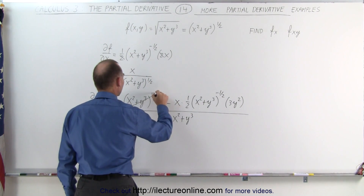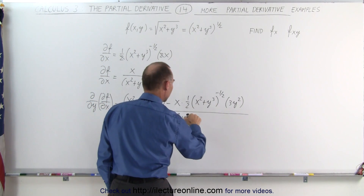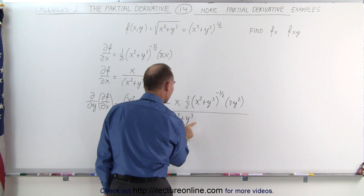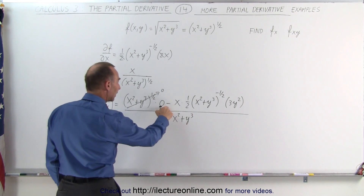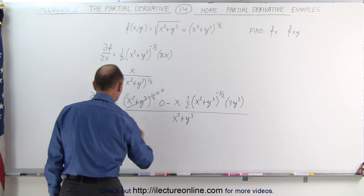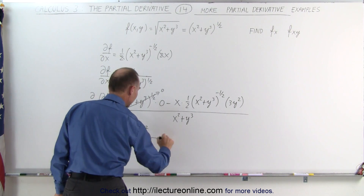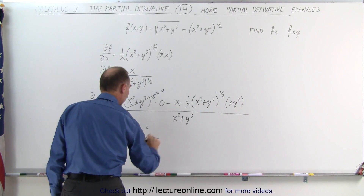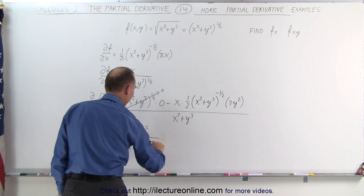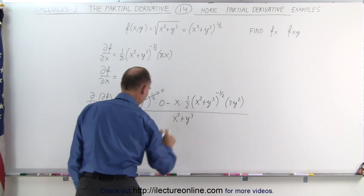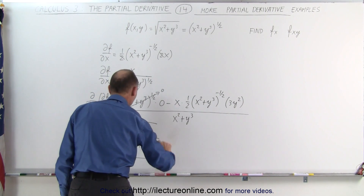Simplifying, the zero term drops out. This can now be written as: we have a minus x, a 3, and a y squared in the numerator — that is minus 3xy squared — divided by 2 in the denominator, and the quantity x squared plus y cubed to the one-half power combined with the additional factor brings it to the three-halves power. This is the result.